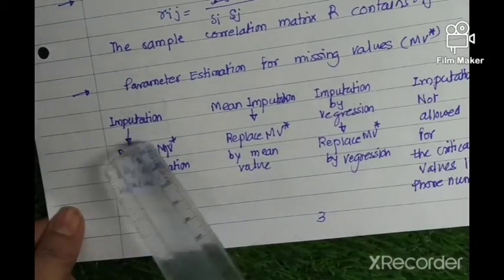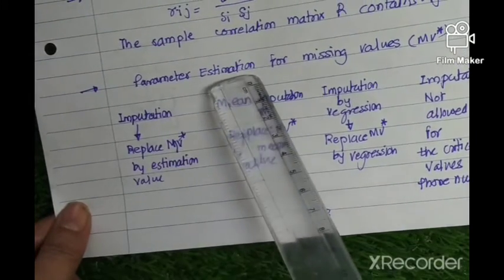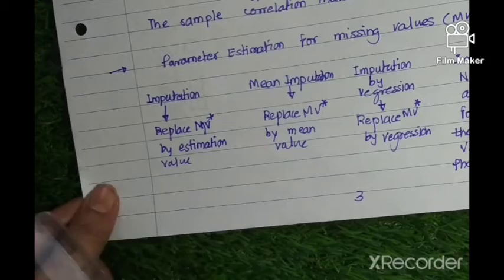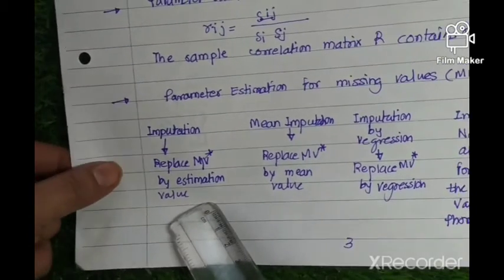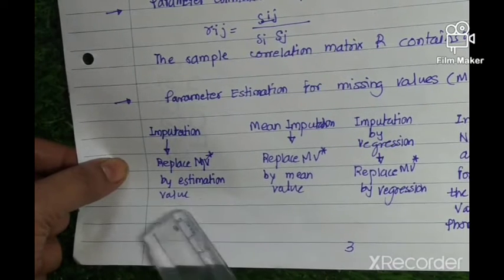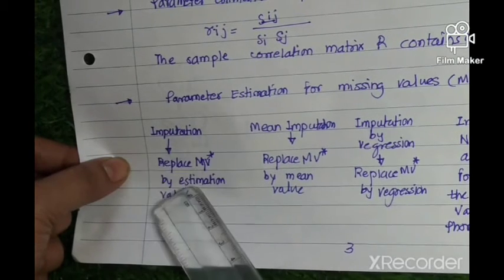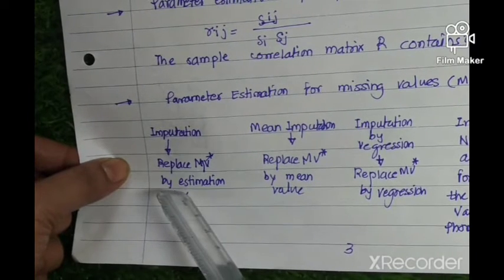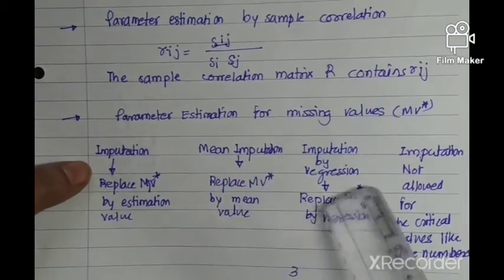Missing values are a common problem in data science, and they can be addressed through parameter estimation. Parameter estimation is a very important technique in data science and AI, supporting missing value imputation by replacing the missing value with an estimation of that value using the estimation techniques discussed in this lecture, or by popular methods like mean imputation.